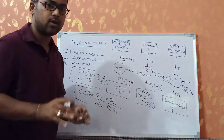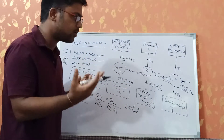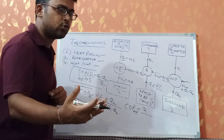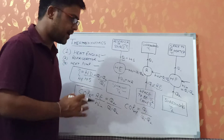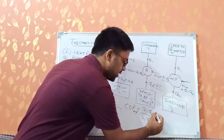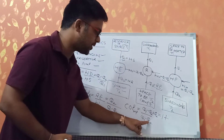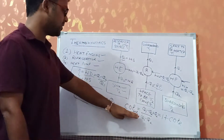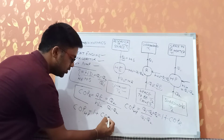The work input for the heat pump is also Q1 minus Q2. COP of the heat pump equals what we want (Q1, heat delivered to the heated space) upon what we pay (work input Q1 minus Q2). To find the relationship between COP of heat pump and COP of refrigerator: COP of heat pump equals Q1 upon Q1 minus Q2, which equals 1 plus Q2 upon Q1 minus Q2, which equals 1 plus COP of refrigerator.